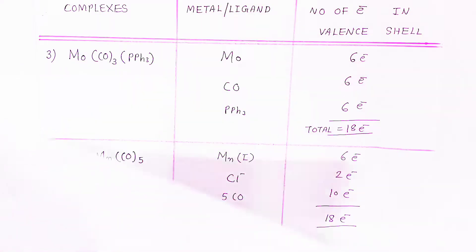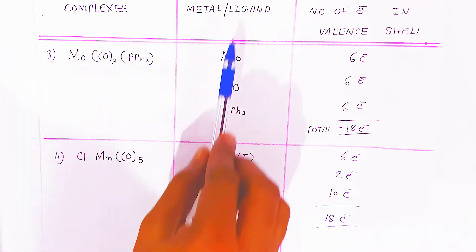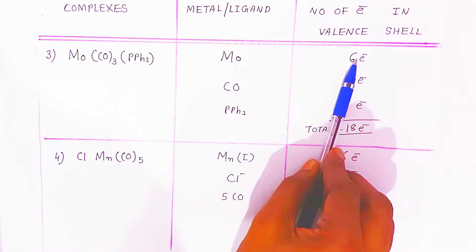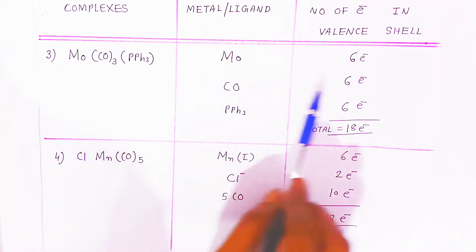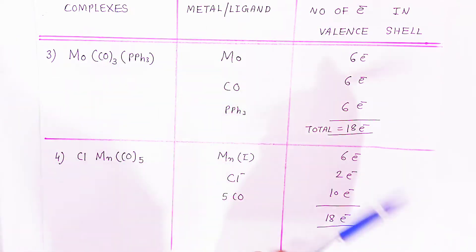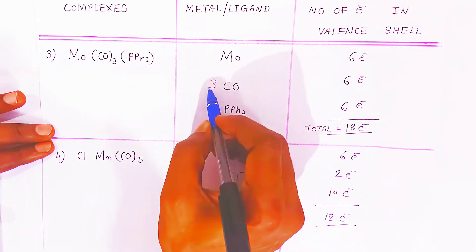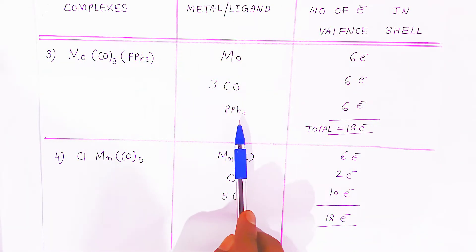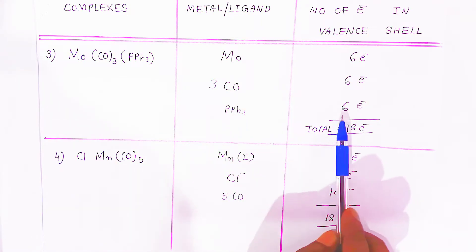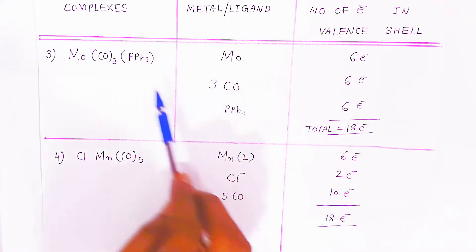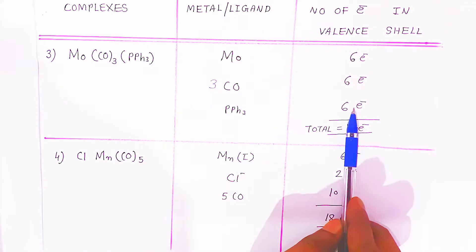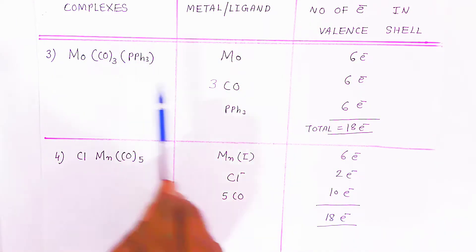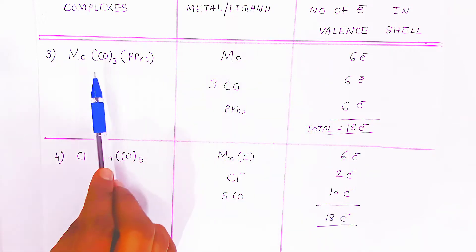In the third example, the metal is molybdenum, which provides 6 electrons in its valence shell. There are 3 carbonyl ligands, which provide 6 electrons total. Triphenylphosphine also donates 2 electrons each; with 3 ligands, that gives 6 electrons. When you add all electrons — 6 + 6 + 6 — the total is 18 electrons. Therefore, this complex has a stable configuration and is stable.